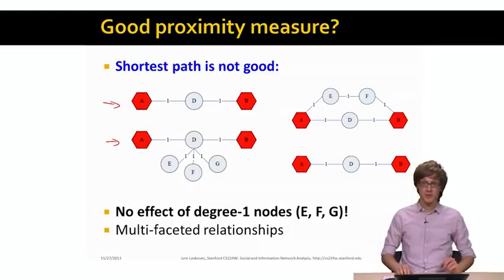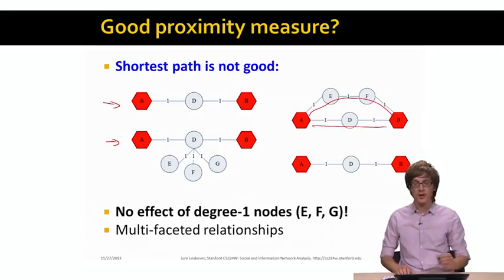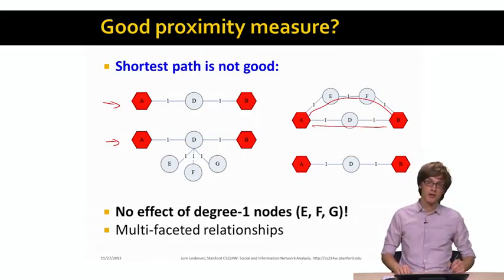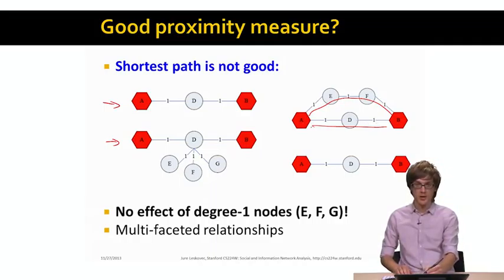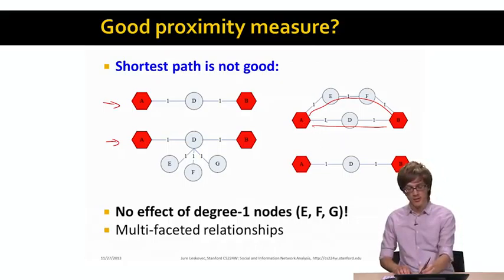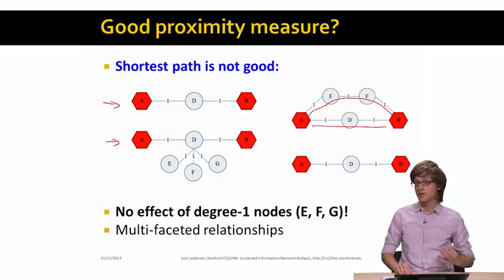Another thing that happens when we are using shortest path to measure proximity of nodes in a graph is that if there are multiple separate paths between a pair of nodes, we don't really care about that. Even though here in the first case, intuitively, we would like nodes A and B to be closer to each other than in the second case because in the second case there is only one path, but in the first case we have two different paths connecting A and B. So shortest path length between a pair of nodes may not be the best notion of proximity.